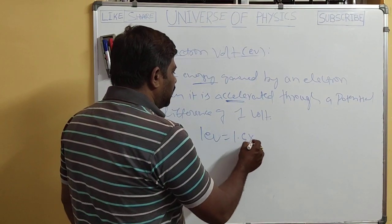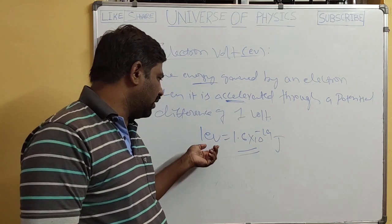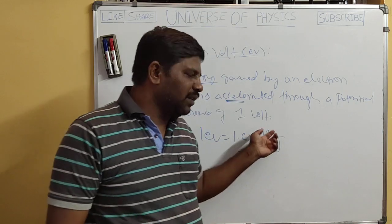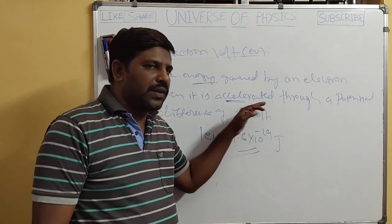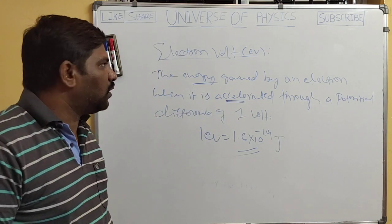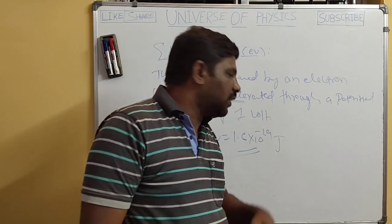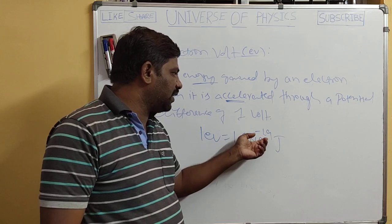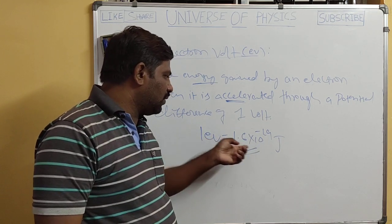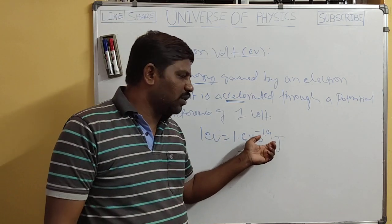1 eV is equal to 1.6 × 10⁻¹⁹ joules. Here, E is the charge on the electron which is 1.6 × 10⁻¹⁹ coulombs, and V is 1 volt, giving 1.6 × 10⁻¹⁹ joules. So 1 electron volt equals 1.6 × 10⁻¹⁹ joules. This is the way we express the photoelectric work function energy in electron volts.